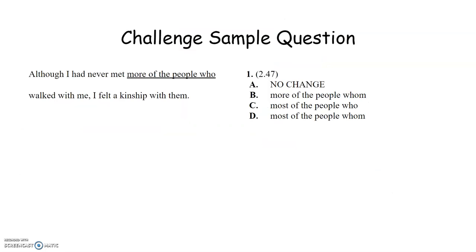Here is a challenge sample question, so same deal. If you want to pause the video, go ahead. Once you unpause to read, you will see that this says, although I had never met more of the people who walked with me, I felt a kinship with them. We're going to do, it might seem a little repetitive, but this is what works. Form a question. Who walked with me? That's the only part of the sentence that we really need to understand whether we're going to use who or whom. If we answer that, we're going to say, they walked with me. We wouldn't say them walked with me, so who is the correct word to use in this sentence.